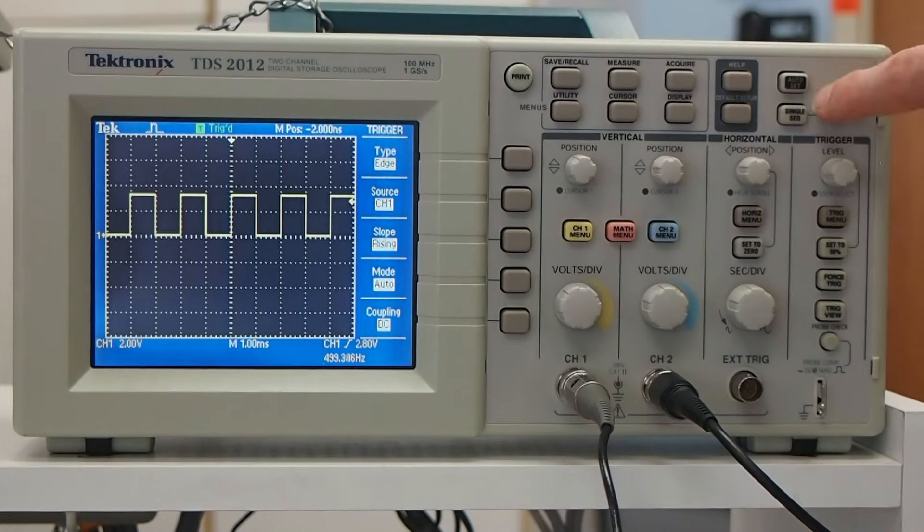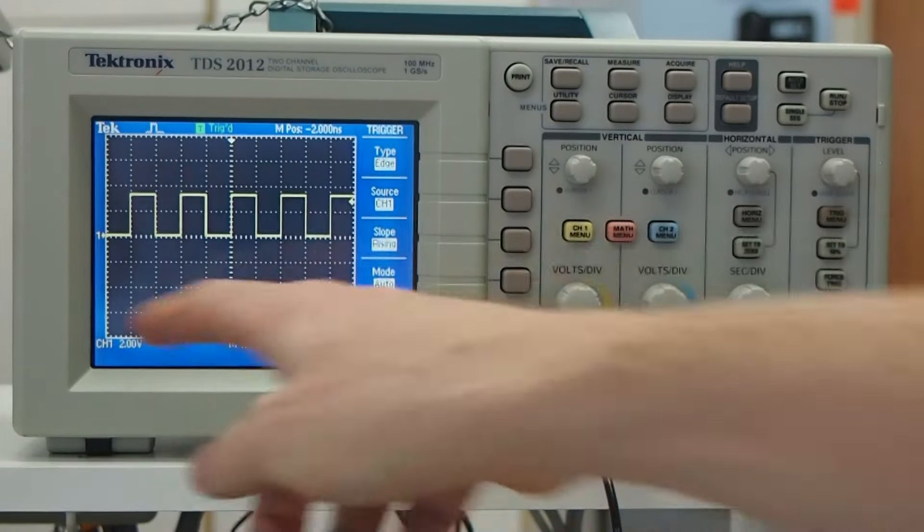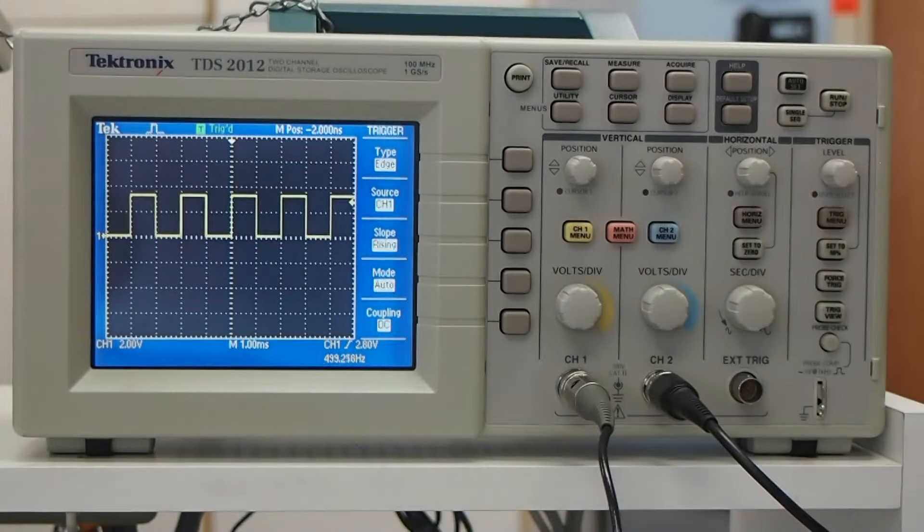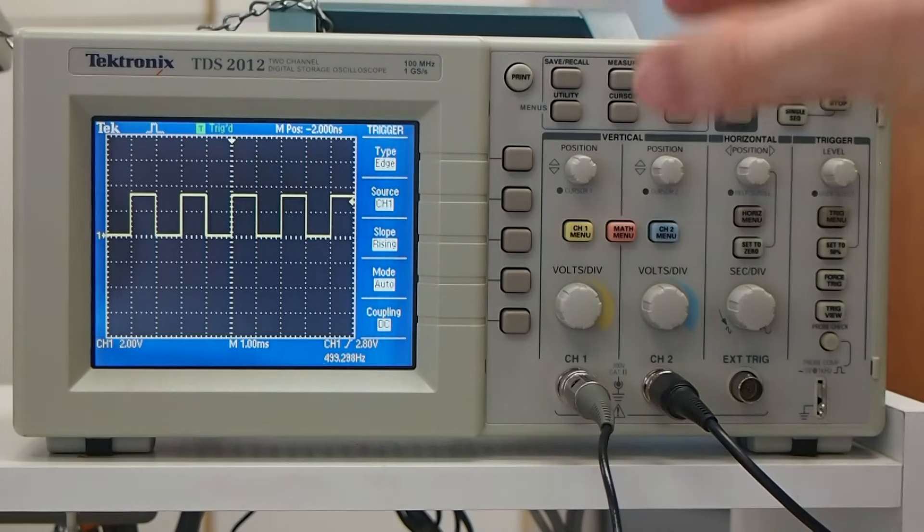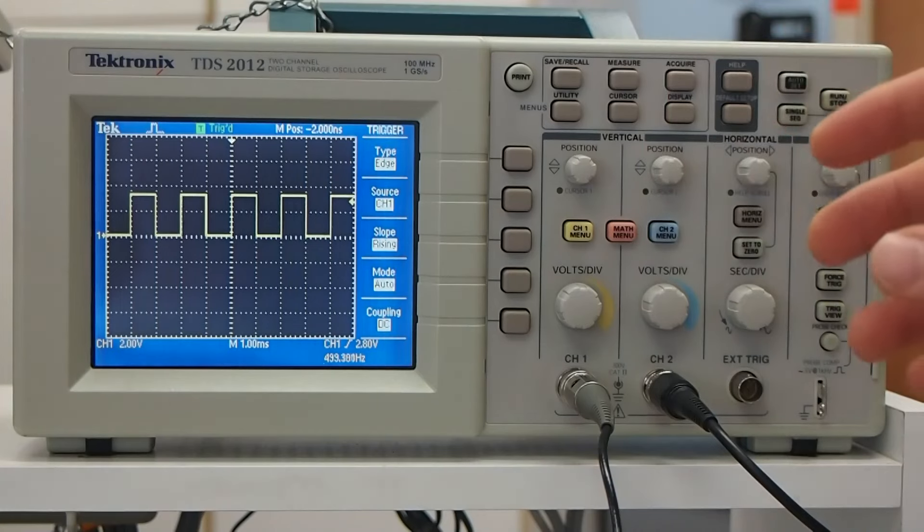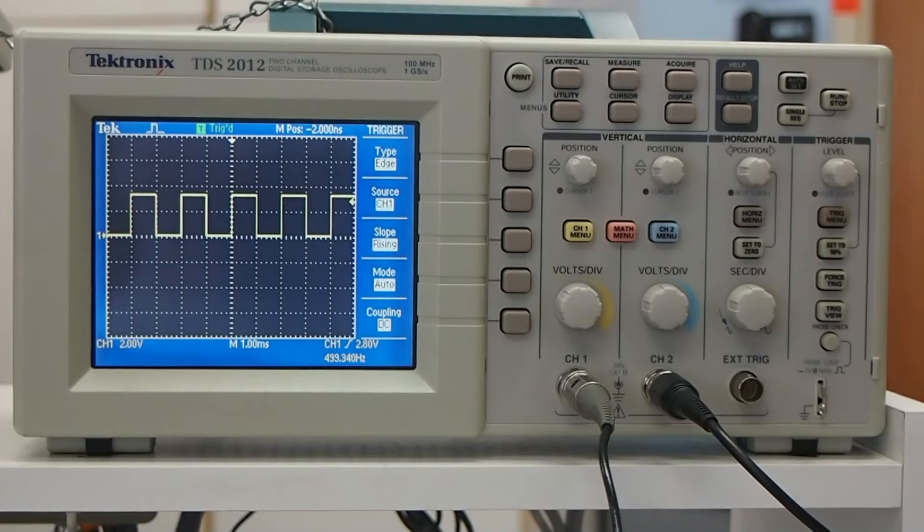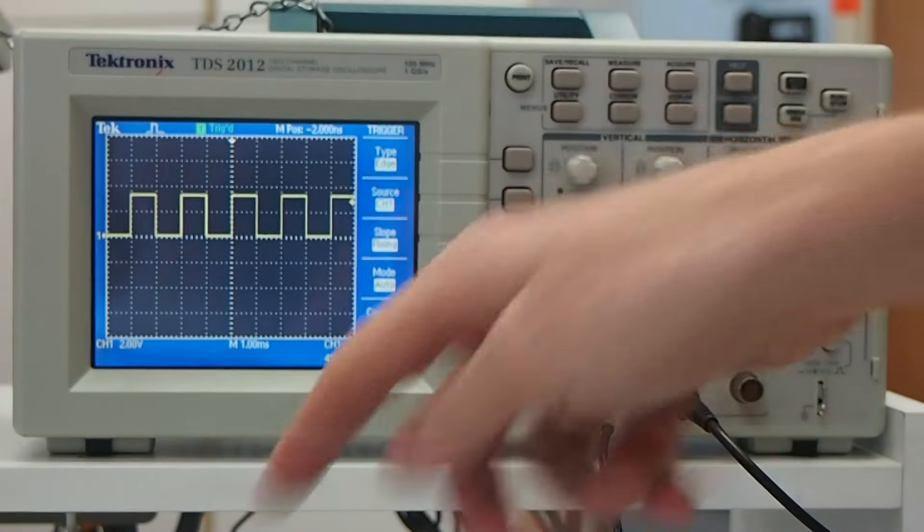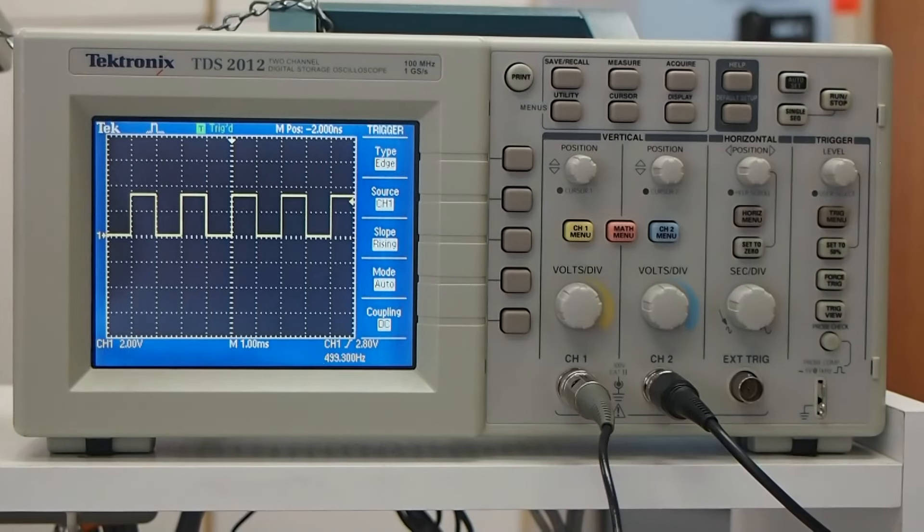Up here you'll see a little button labeled Auto Set. This will automatically try to determine what the signal is and create some reasonable X and Y axis for that. Please don't ever use this button. And the reason for that is if you don't know what kind of signal you're looking for, then it's very hard to trust the results of Auto Set.